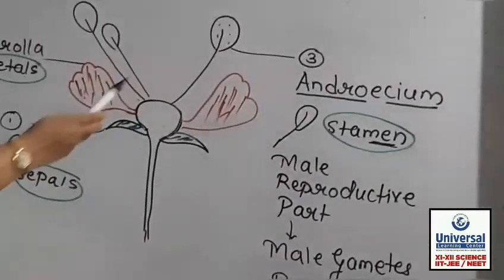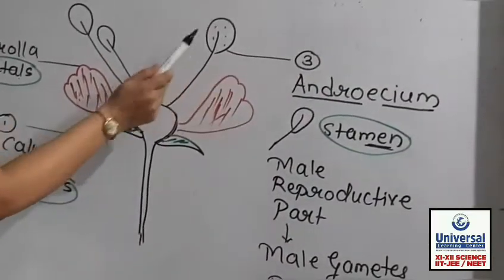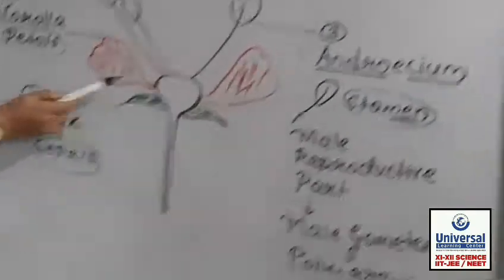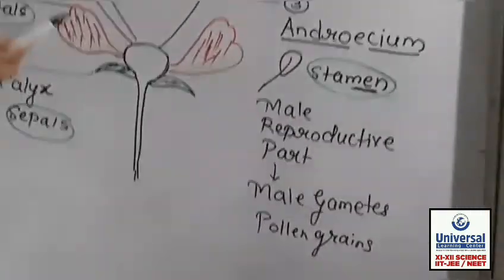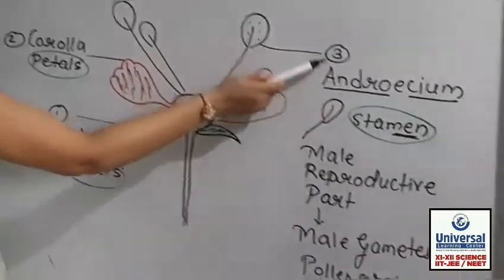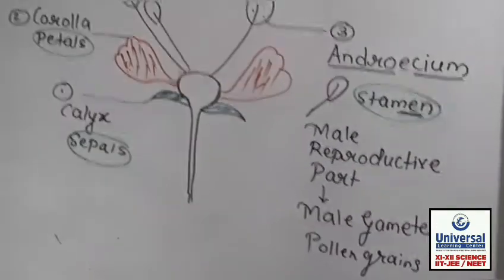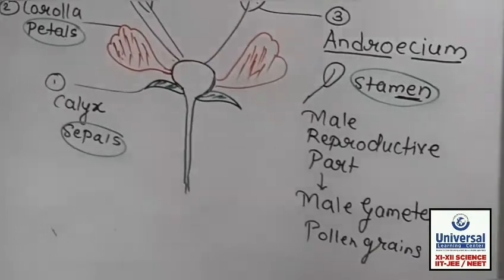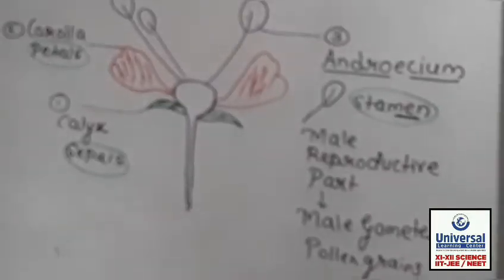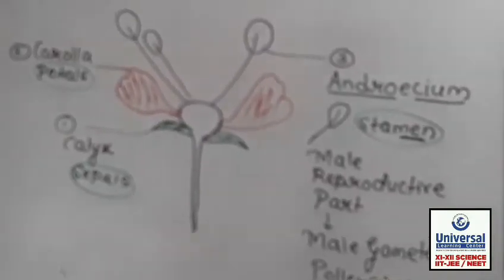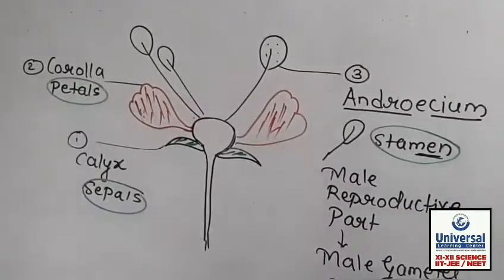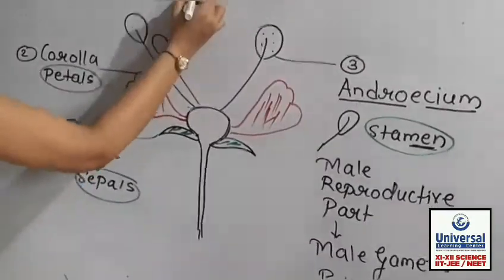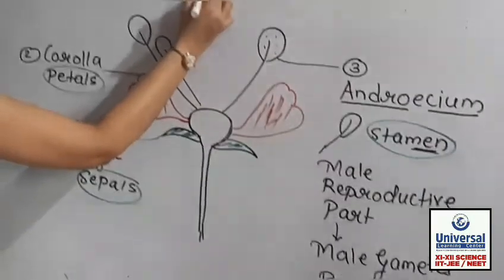So the third layer is androecium. To recap: first is calyx, then corolla, then androecium. Now the last one — the fourth wall. We have seen three; now the fourth layer.